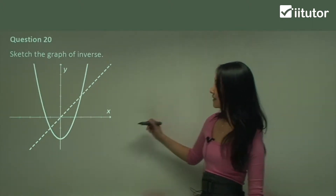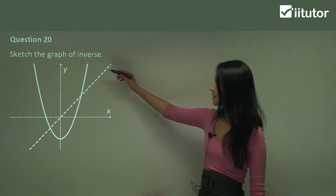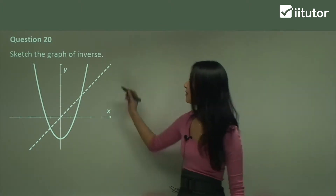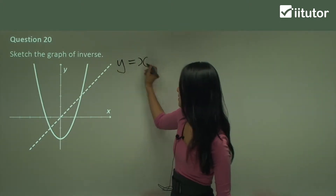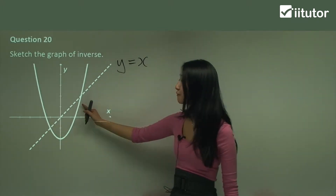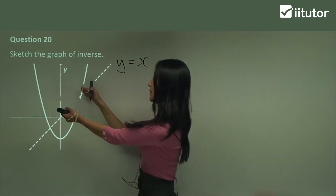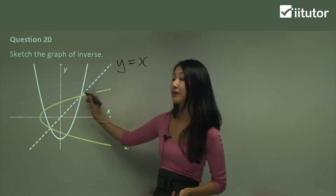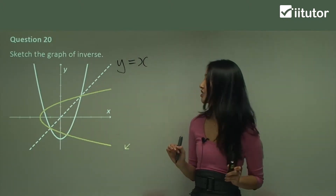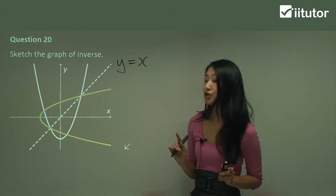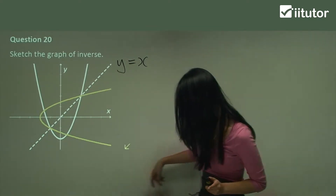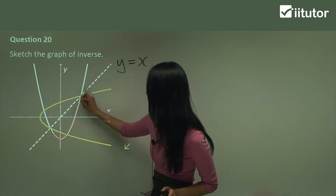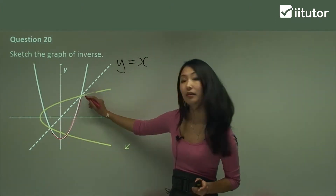So here we've been given the parabola and we want to sketch the graph of the inverse of this function. The y equals to x line has already been drawn as the dotted line. So if it's reflected in this line, can you see how it's almost going to twist over this way? So the inverse will look like this. Now if you're having trouble imagining this, I want you to only imagine this part here — only this part which is underneath the dotted line.